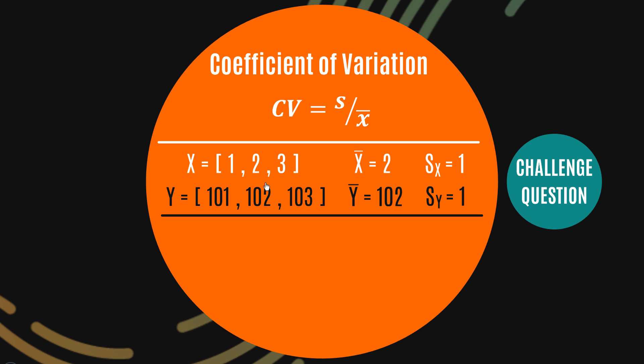But is that really the full story of the spread of each of these two data sets? What happens if you think about it this way? Have a look at data set X again. You can see that within data set X we have an observation here, this 3, which is in fact three times one of the other observations.